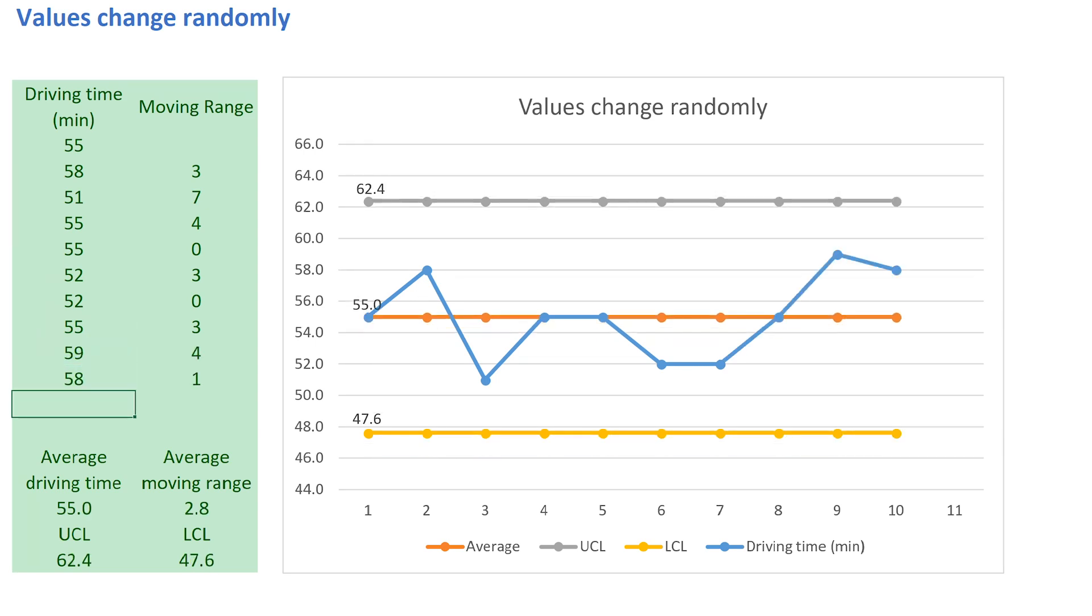Previously, the average moving range was 0.8, giving us control limits at 57.1 and 52.9. And now, the average moving range has increased to 2.8, giving us control limits at 62.4 and 47.6.